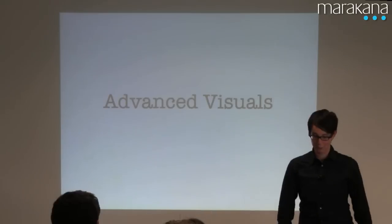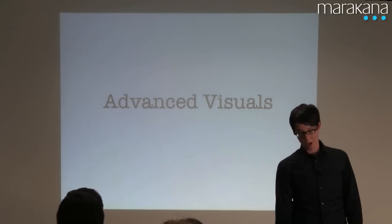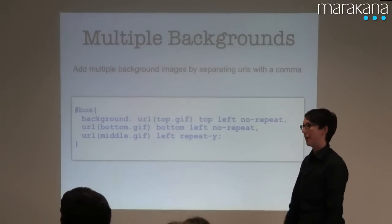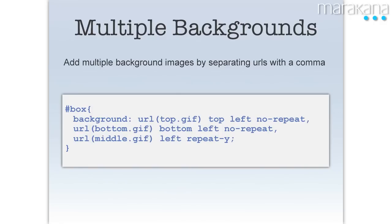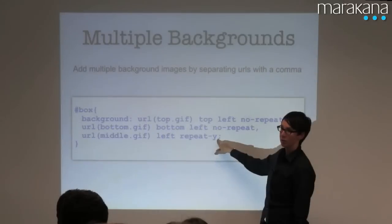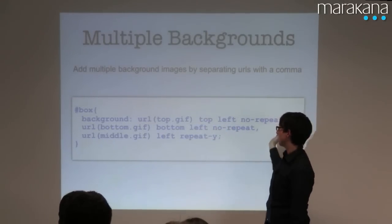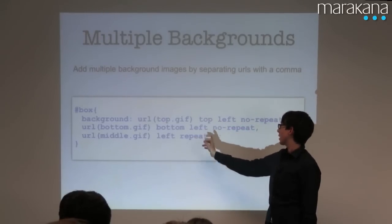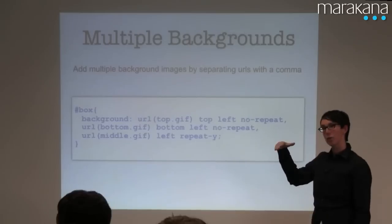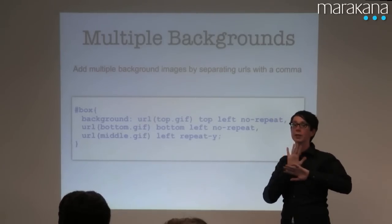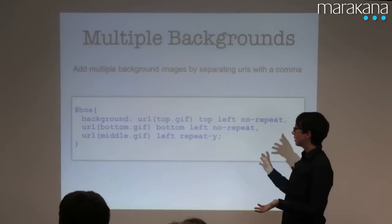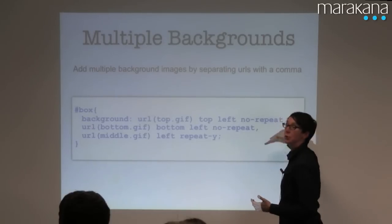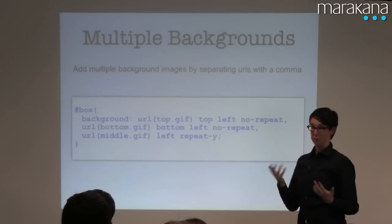Now we're going to get advanced. You can now have multiple background images. Notice how you're placing each one — this is just one property, 'background', and these three URLs are separated by commas. This one's at the top left, this one at the bottom left. The way they interact is the first one in the list is going to be the top layer. It's more designed not to overlap — but actually, as long as you know what you're doing, you can have them overlap, and transparency will be respected.